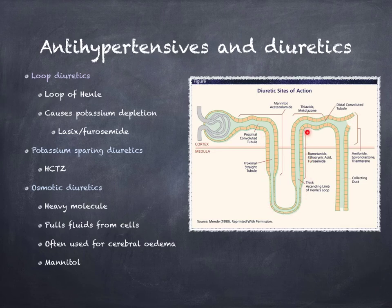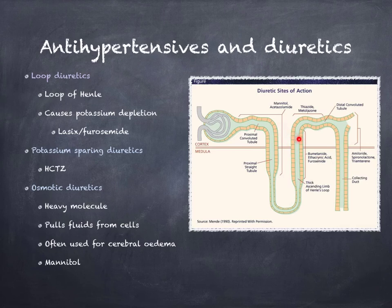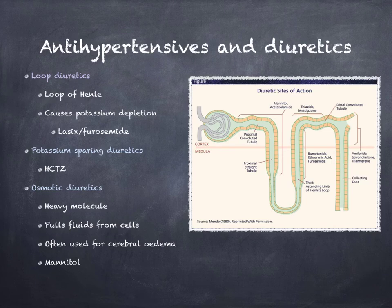Certain areas involve certain electrolytes, and the diuretics take advantage of these. Loop diuretics work primarily in the area of the ascending loop of Henle. What they do is prevent the reabsorption of sodium. Since water follows sodium, if sodium doesn't get reabsorbed, water doesn't come back in — it stays out and eventually leaves the body through the usual mechanisms.